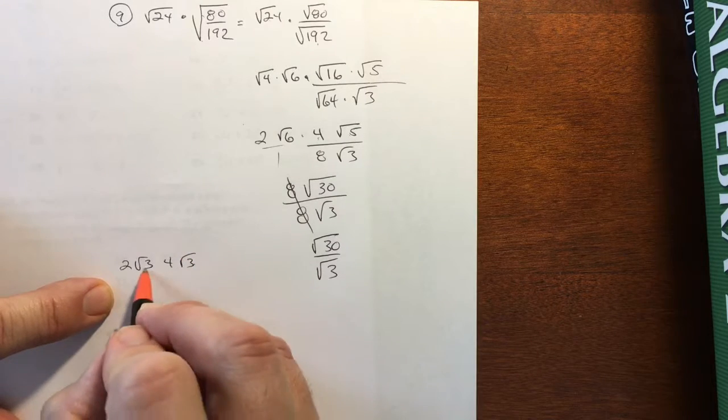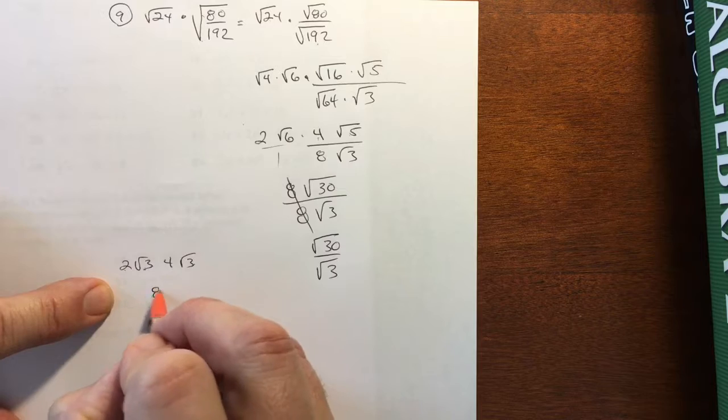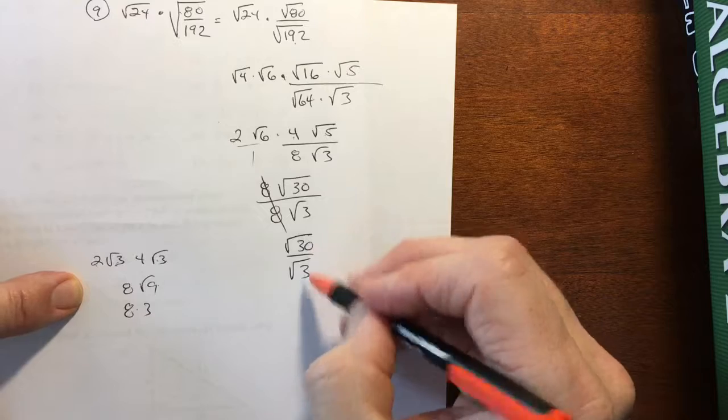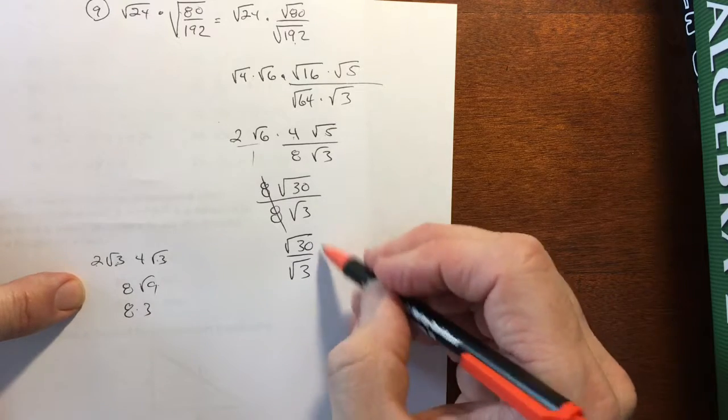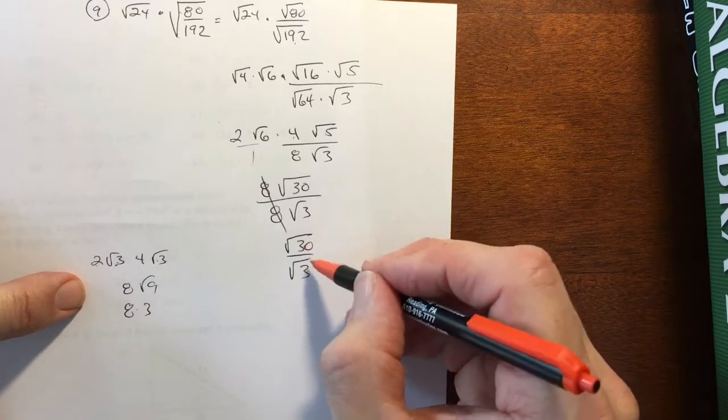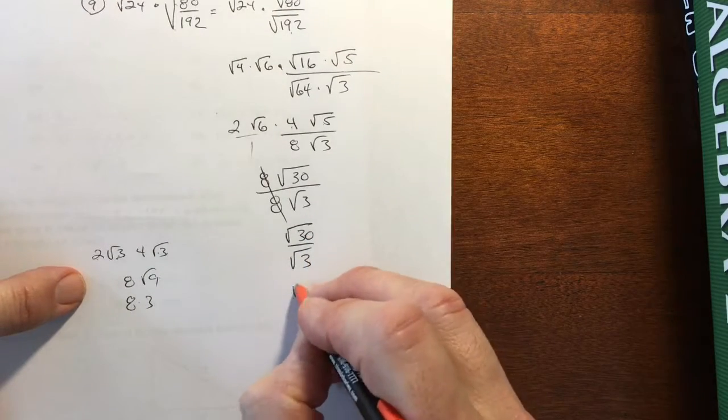When we multiply, you have 2 square root of 3 and 4 times the square root of 3. When you multiplied, you can multiply what's inside together, right? So you have 2 times 4 is 8, and 3 times 3 is 9. And then that will become a 3. Well, you can divide as well. I can just divide these straight up. And 30 divided by 3 is 10. So this is going to become square root of 10.